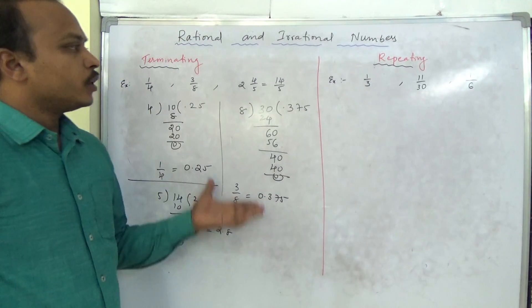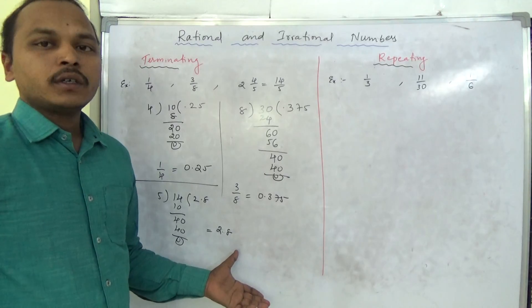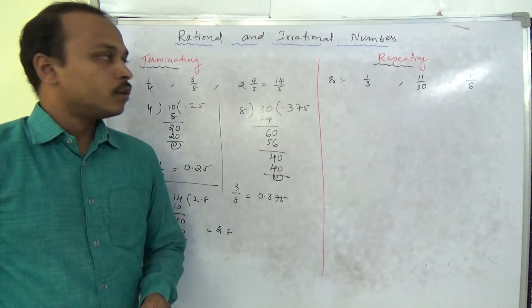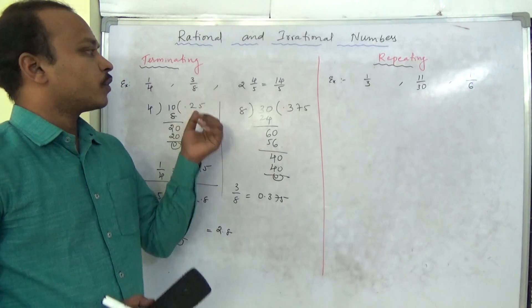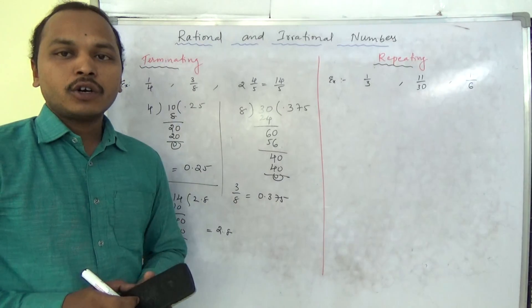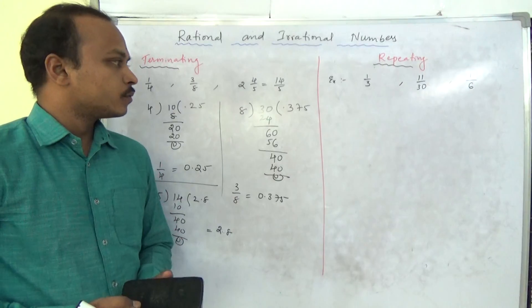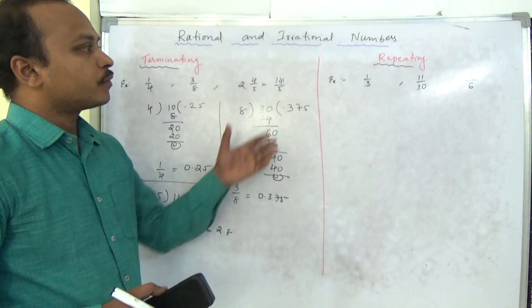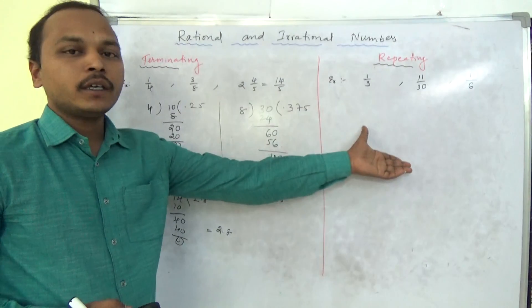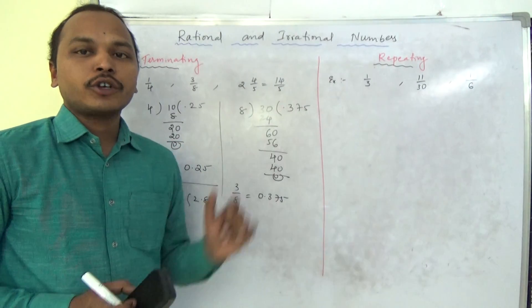Without doing division, is it possible to find out whether a fraction is terminating or non-terminating? After seeing the repeating examples, we will look at a shortcut method.